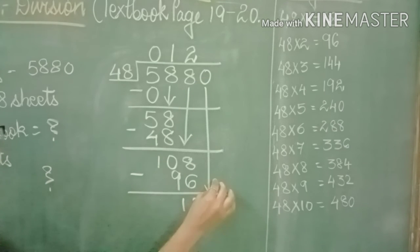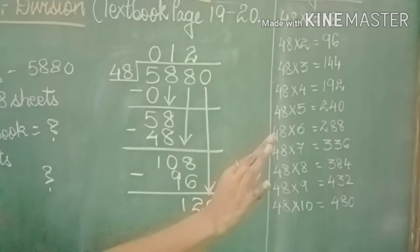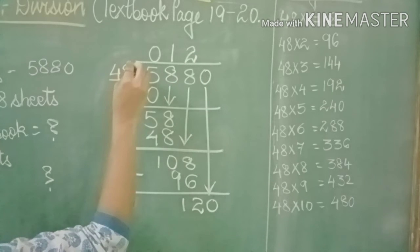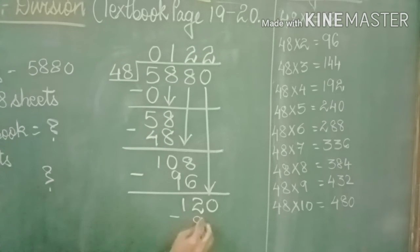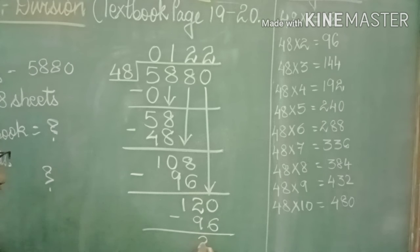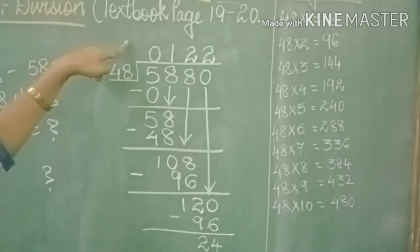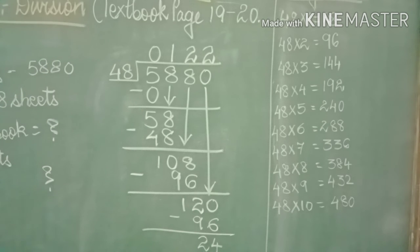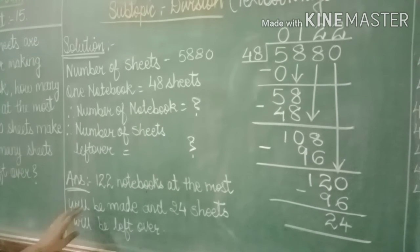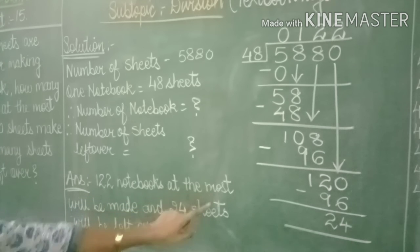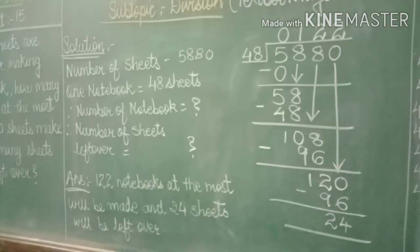The next number is 0. We draw an arrow and bring it down to get 120. 48 threes are 144, which is bigger than 120, so we take 48 twos are 96 instead. We write 2 and subtract 96. The final answer is 24. 120 minus 96 gives 24. So we have the exact answer: 122 notebooks at the most will be made and 24 sheets will be left over. We will write this in the answer: 122 notebooks at the most will be made and 24 sheets will be left over.